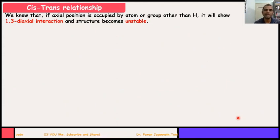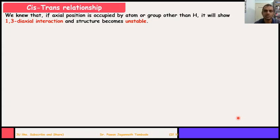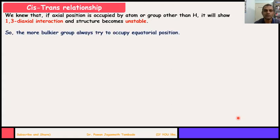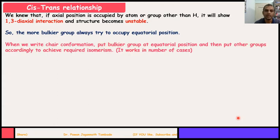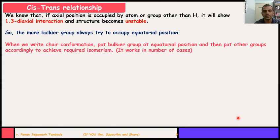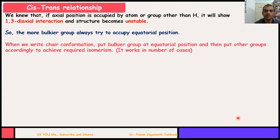We knew that if the axial position is occupied by an atom or group other than hydrogen, it will show 1,3-diaxial interaction and that structure becomes unstable — this we saw in an earlier lecture. So the bulkier group always tries to occupy the equatorial position. When we write chair conformation, always put the bulkier group at the equatorial position first, then put the remaining group accordingly to maintain the cis-trans isomerism. This works in most cases, though there are some exceptions we will see in later video lectures.